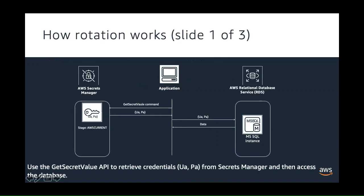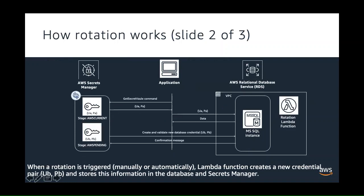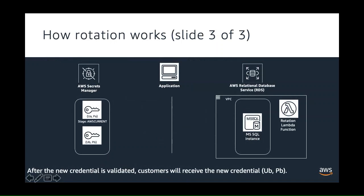This diagram shows how an application calls Secrets Manager to get the secret value, retrieve the username and password, and then access the RDS resource. Until validation, when the rotation is triggered, the first call returns credentials UA and PA. When rotation is triggered, new database credentials UB and PB are created, but until confirmation, we still continue to respond with UA and PA. As soon as validation is completed, UA and PA become the AWS previous credentials and the new credentials UB and PB become the credentials returned on a get secret value call.